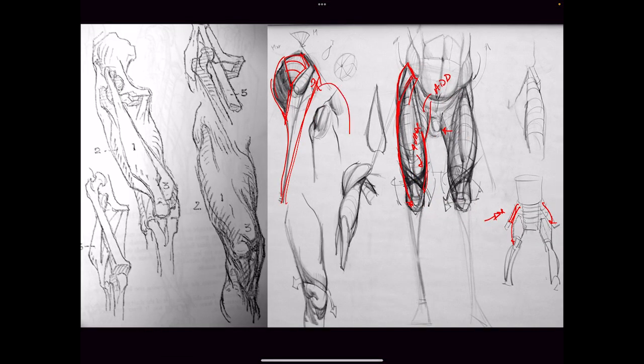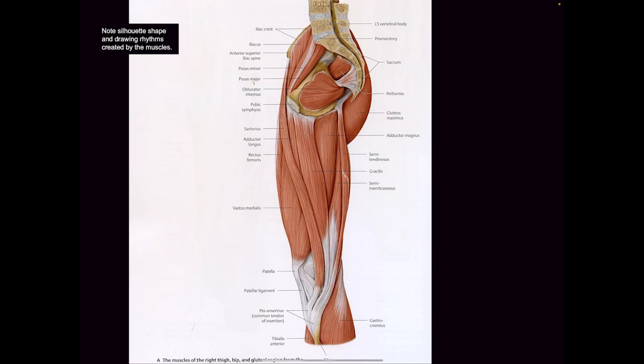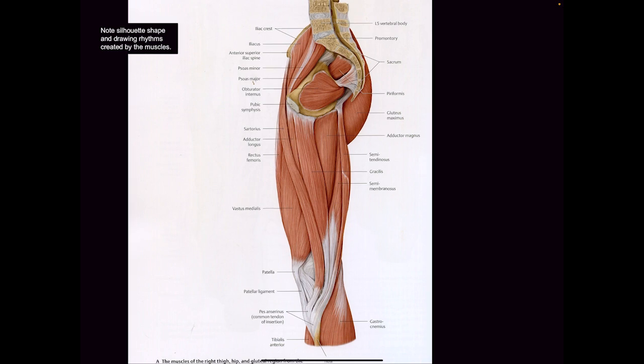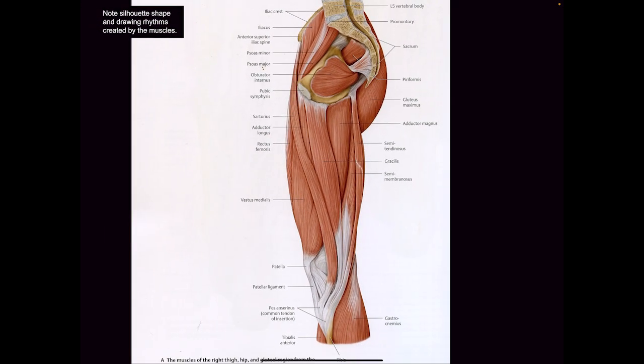When we get into the deltoid, you're going to see me compare a lot to the deltoid, because there's always a similarity between those two limbs. The anatomical landmarks of the legs and the arms have a lot in common. Rarely do you see it, but sometimes you will see the inside of the leg — I just want to point this out because it's confusing.